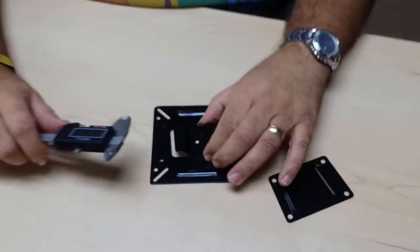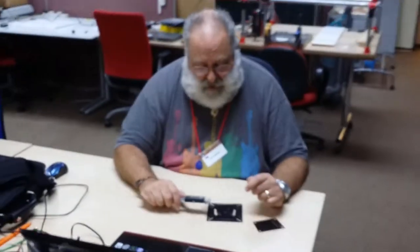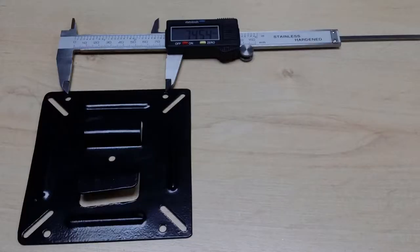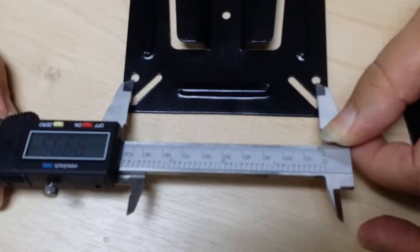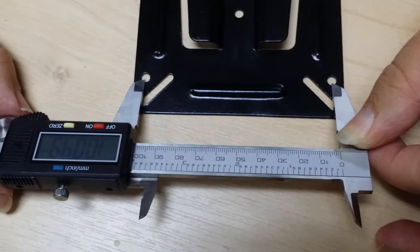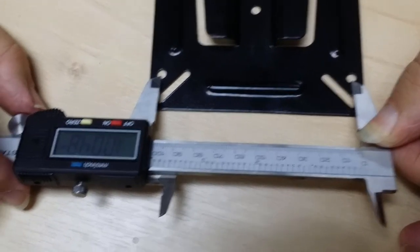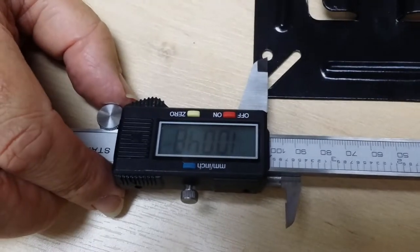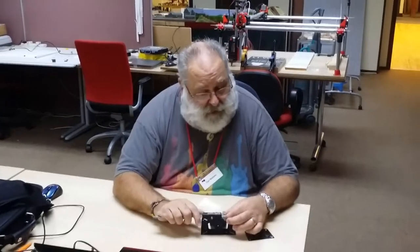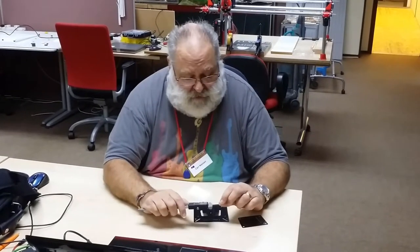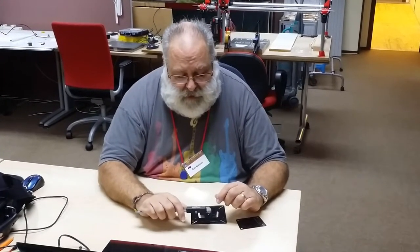Sometimes what you need to know is the distance between two hole centers. You could measure it like this and be reasonably accurate—that's around 100 millimeters. Depending on what you're doing, that might be good enough, but if you're wanting absolute accuracy, there's a crafty little trick.